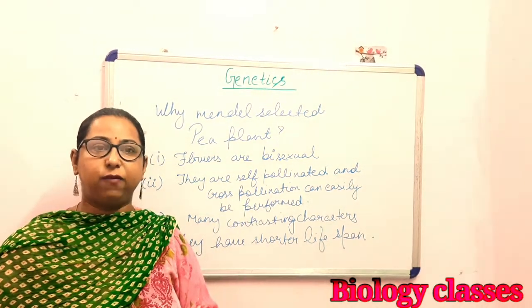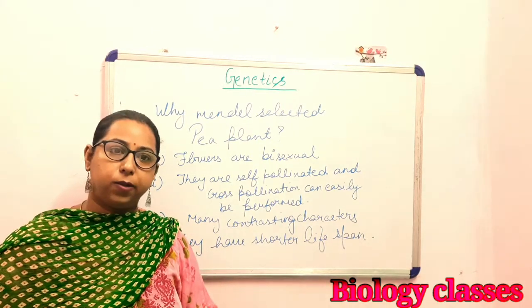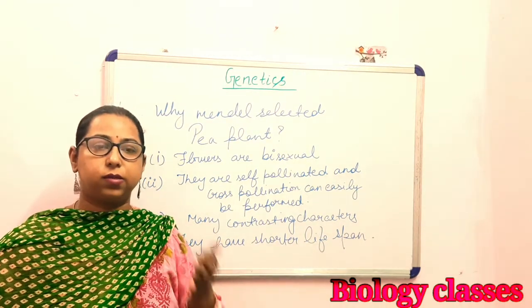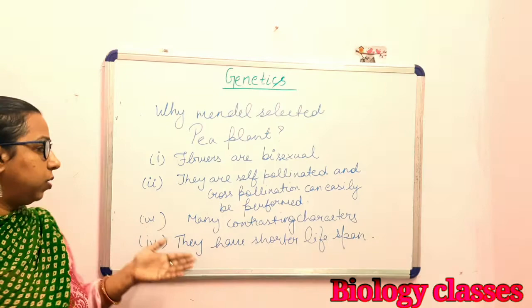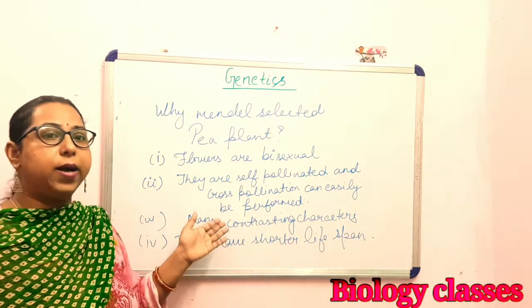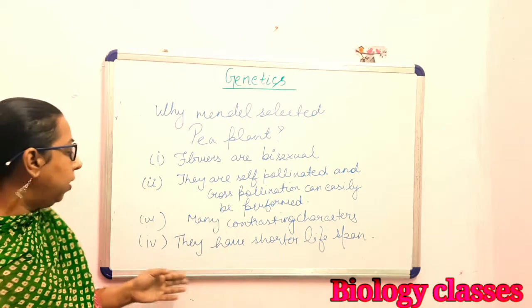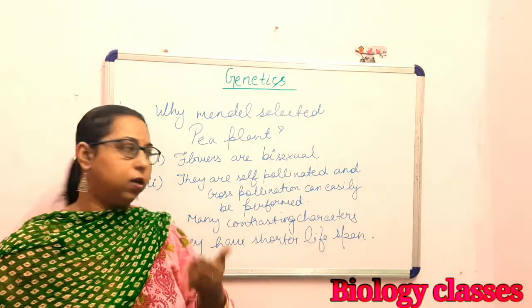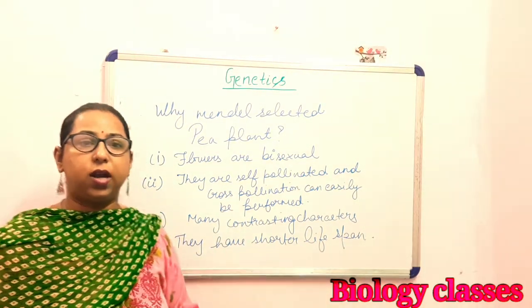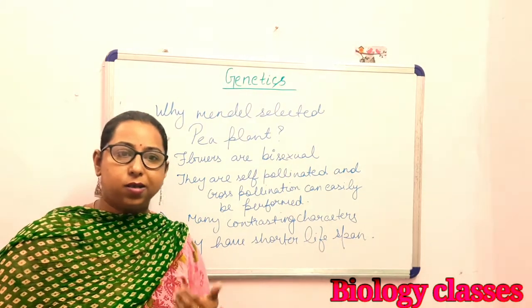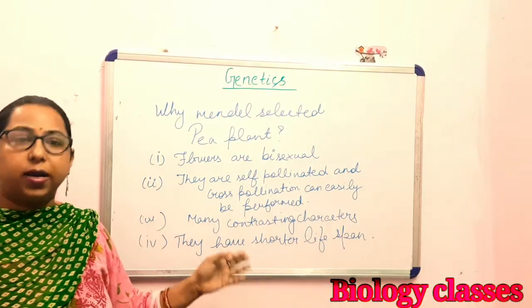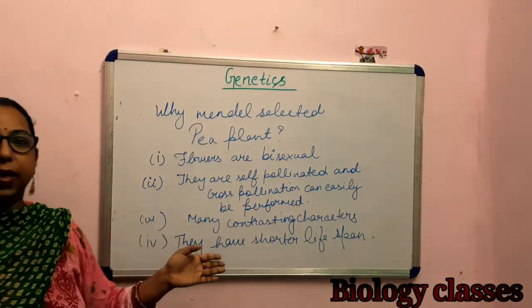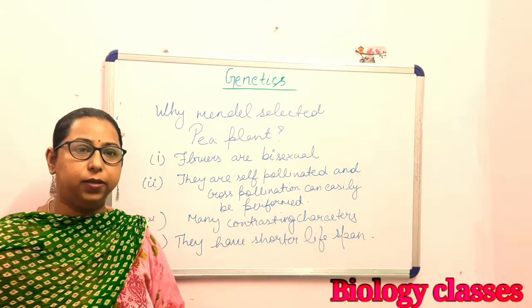The third feature is that many contrasting characters are present in the pea plant. We have seen that flower color is white or purple, and height may be tall or dwarf — these are the contrasting characters observed by Mendel. Next, the pea plant has a shorter life span, which means the maintenance needed to maintain the plant is also less. These are the reasons why Mendel selected the pea plant.